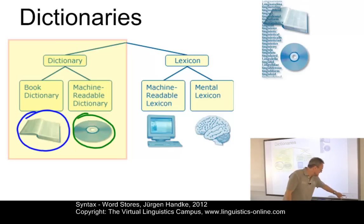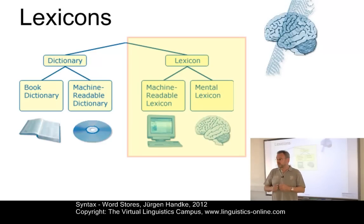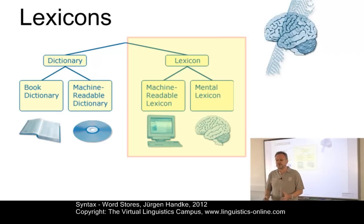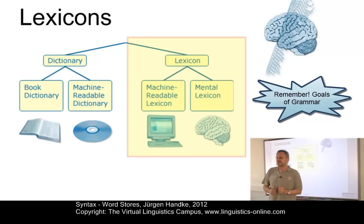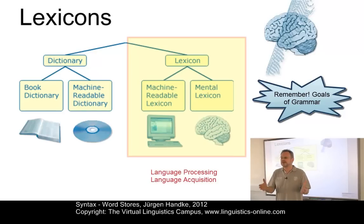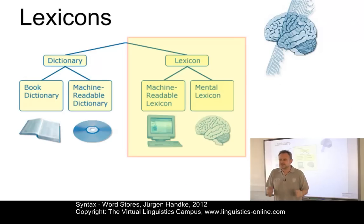Let's now look at lexicons. A lexicon is the central component of a natural language processing system, whether human or machine. And thus, it is a central component of a theory of grammar. Any theory of grammar seeks to define, among others, the principles underlying language processing and language acquisition. Thus, the central word store in this respect is the mental lexicon, rather than any variant of a dictionary.